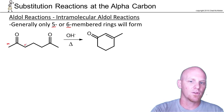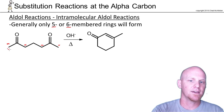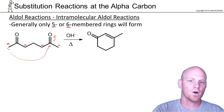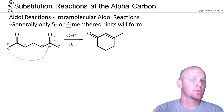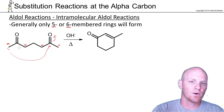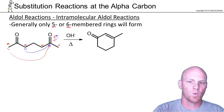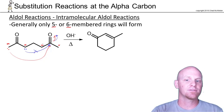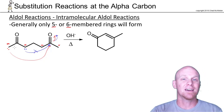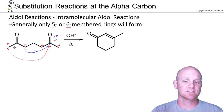Looking at my diketone, I've got alpha carbons all over the place — alpha there, alpha there, alpha there. If I deprotonate here and make the enolate, it could attack this carbonyl right here, and that would be a one-two-three-four-five-six-membered ring forming. I could also look at deprotonating here and having it attack the carbonyl, but that would be a one-two-three-four-membered ring, so we'll rule that out. Because the molecule is symmetrical, I don't have to consider the other two attacking in the other direction.